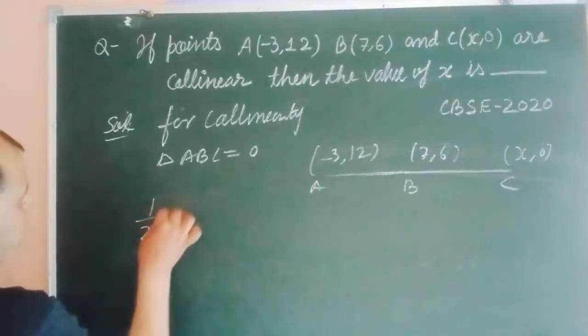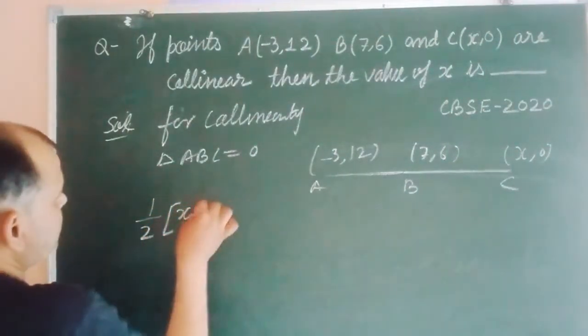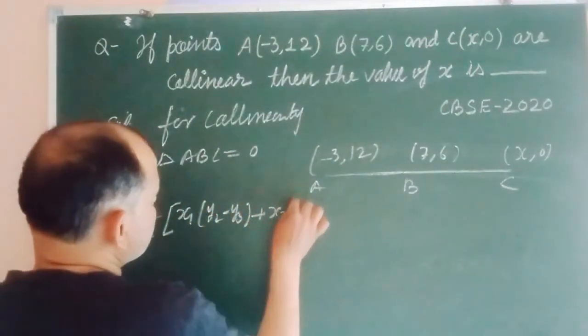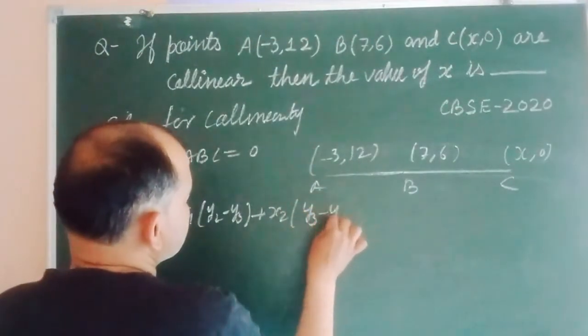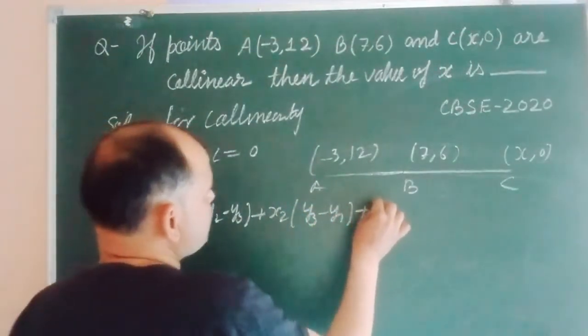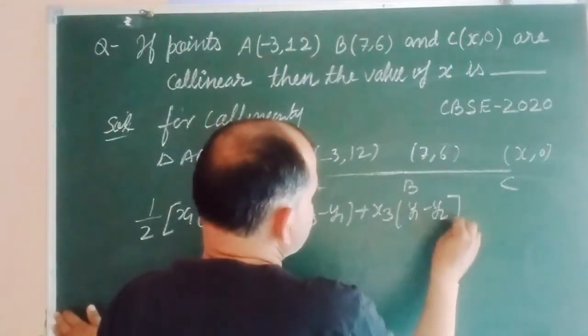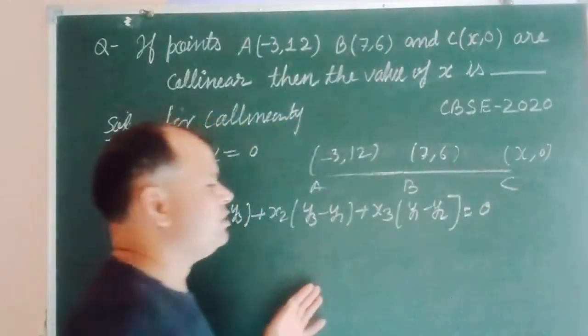So area of triangle is half times [X1(Y2 minus Y3) plus X2(Y3 minus Y1) plus X3(Y1 minus Y2)]. So this is the formula of area of triangle.